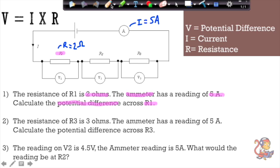So I've been given R the resistance and I the current. So I need to use my equation V equals I times R. And then I just need to put my numbers in. So V equals 5 times 2, which is 10 volts.